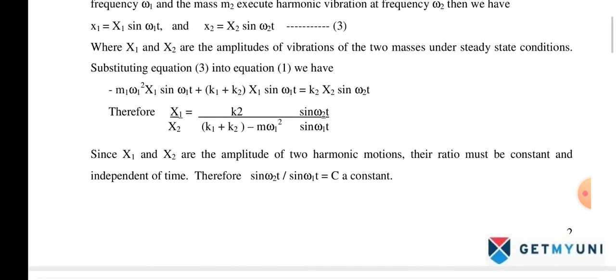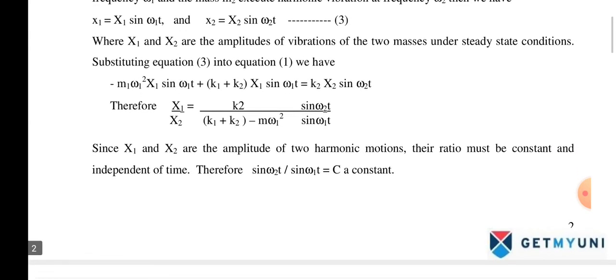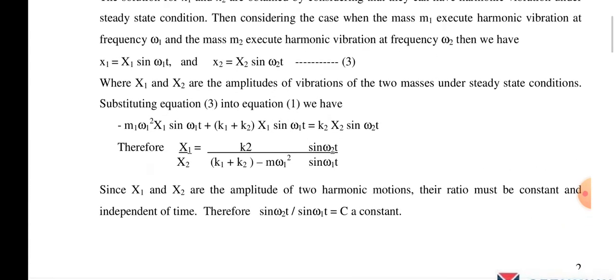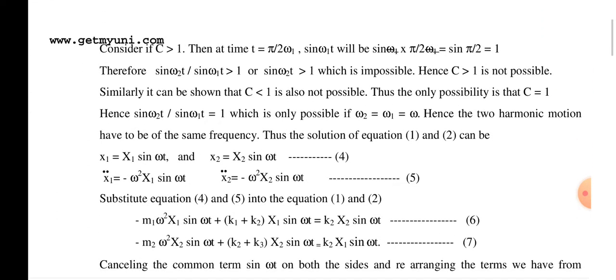Substituting equations 3 into equation 1, we get: −m1·ω²·X1·sin(ωt) + (k1 + k2)·X1·sin(ωt) = k2·X2·sin(ωt). Therefore, x1/x2 = k2 / (k1 + k2 − m·ω²). Since x1 and x2 are amplitudes of harmonic motions, their ratio must be constant and independent of time, which requires sin(ω₂t)/sin(ω₁t) to be constant.